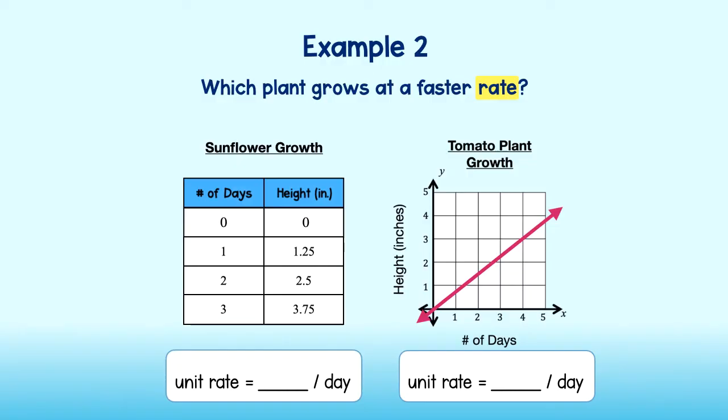Let's take a look at the sunflower. I'm going to write the equation that represents this table because I think it will help me determine the slope. If I multiply each of the x values by 1.25, I see that I get the corresponding y value. Therefore, my equation is y equals 1.25x.